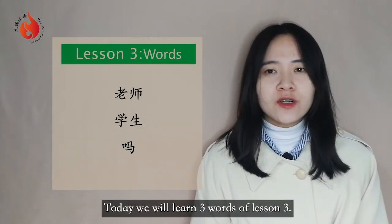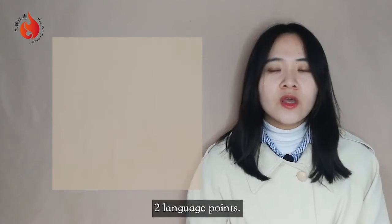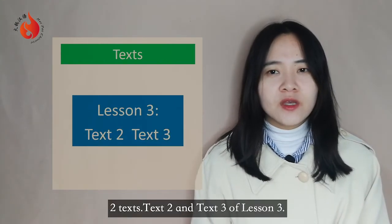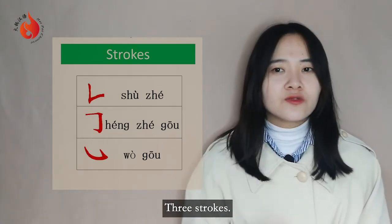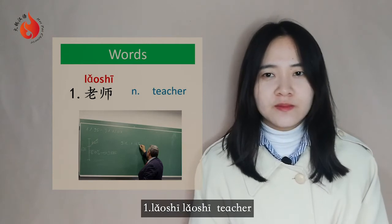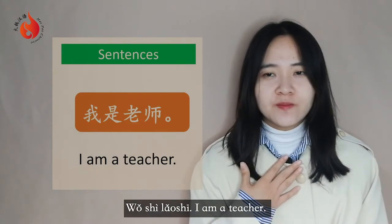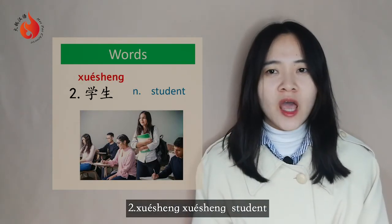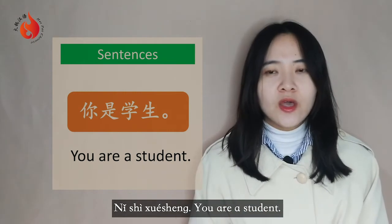Today we will learn three words of lesson three. The first word: 老师 — teacher. For example: 我是老师 — I am a teacher. The second word: 学生 — student. For example: 你是学生 — You are a student.